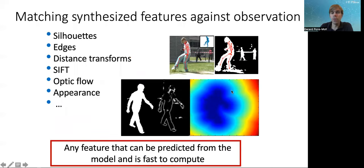You take gradients with respect to the parameters in order to align these two silhouettes, for example. So you optimize. In terms of features, you can use silhouettes or edges, distance transforms, features, optic flow. Many papers have used many different features. In the end, any feature that can be predicted from the model and is fast to compute and differentiable, for some algorithms, then it's a good feature.